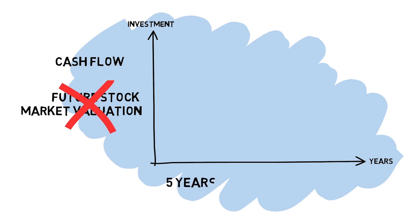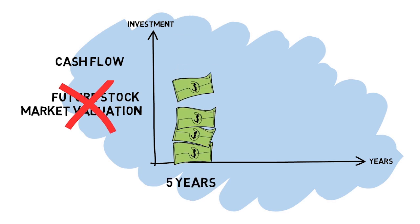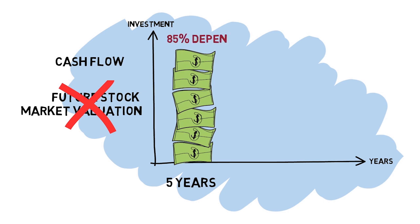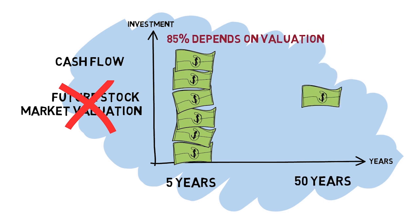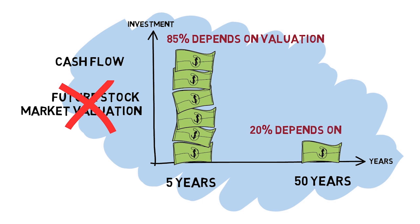For example, at a five-year horizon, 85% of our investment depends on valuation, whereas at a 50-year horizon, valuation influences only 20%.